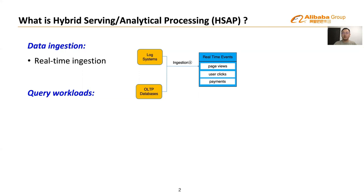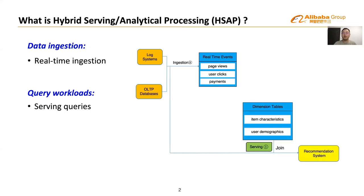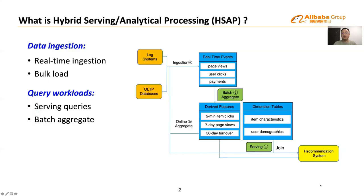There are two types of features: real-time features and derived features. To generate a real-time feature, incoming events are directly joined with dimension data, which is a typical serving scenario requiring high throughput and low-latency point lookups to keep up with high-speed ingestion. Second, the system uses sliding window aggregates on the ingested data to generate derived features of different dimensions and time granularities — for instance, the five-minute clicks of an item or its seven-day page views. The derived features are written back via bulk load and pushed into the recommendation system.